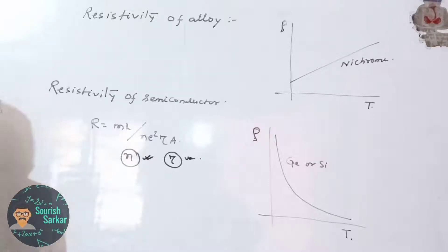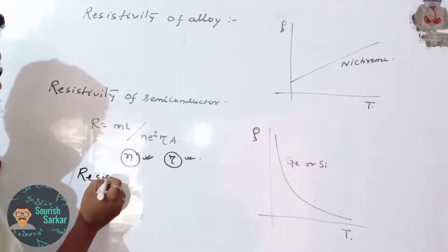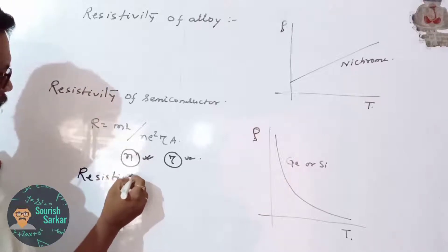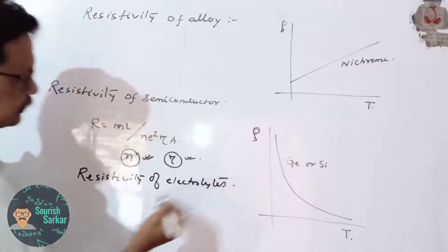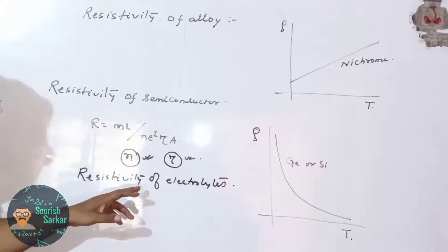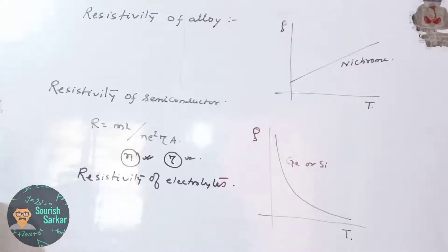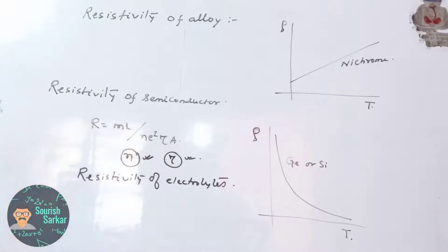This is the reason that in a semiconductor, with the increase in temperature, the resistivity decreases. For electrolytes, with the increase in temperature the resistivity of the electrolyte also decreases. The ions get more freedom to move in the electrolyte, hence the resistivity of the electrolyte decreases.